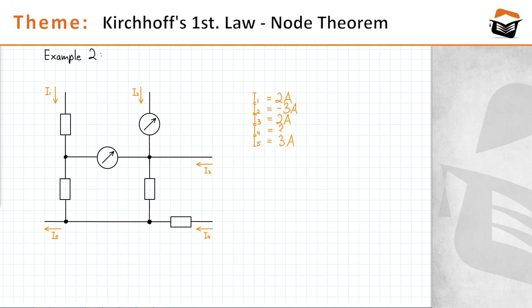Now we're going to move forward to the second example. What I said previously about Kirchhoff's First Law — that the sum of inflowing currents must equal the sum of outflowing currents — does not necessarily apply only to a node, but also to electric sub-circuits or individual components. We have an electric sub-circuit consisting of four resistors and two ammeters. The wisdom that what comes in must come out also applies to sub-circuits. We have five currents, four of which are known and one is unknown, and we want to calculate that unknown current using Kirchhoff's First Law.